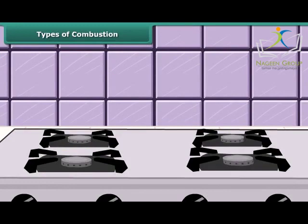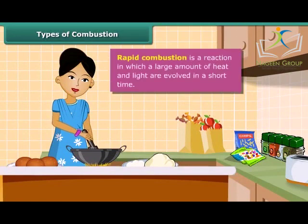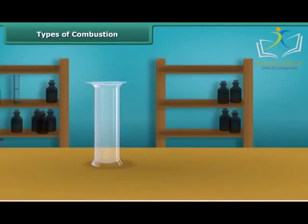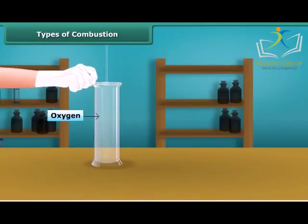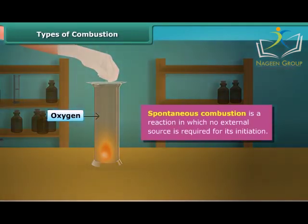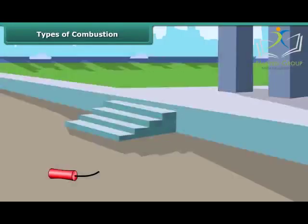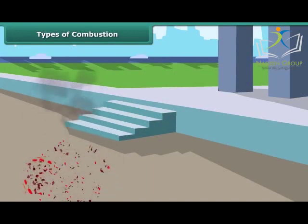Let us now look at types of combustion. A lady igniting LPG in a kitchen — LPG burns quickly producing a lot of heat. This type is called rapid combustion. When white phosphorus is left in the open for some time, it catches fire on its own — this is called spontaneous combustion. Other examples include forest fires and fires in coal mines. The burning of a cracker produces a large amount of heat, light, and sound — this type of combustion is called explosion.